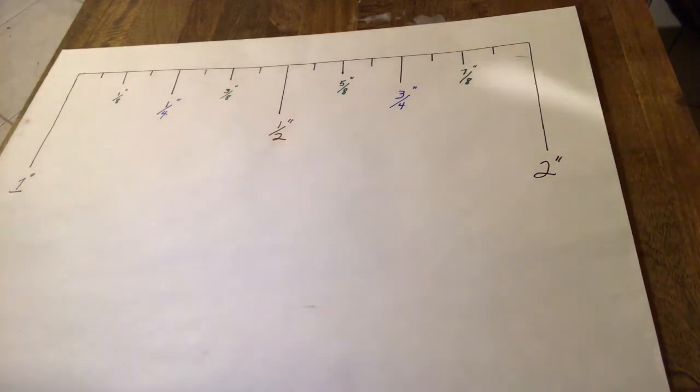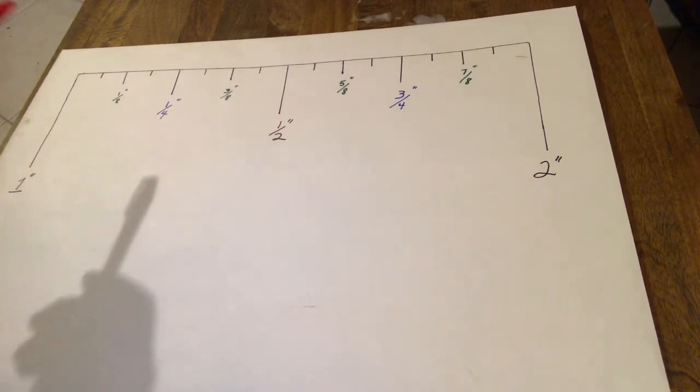Now, don't forget, you have your longest ones, which are your inch, your next longest one is your half-inch, your next longest one is your quarter, then it moves to your eighth-inch, and then the smallest tick mark on this particular ruler is going to be your sixteenth.